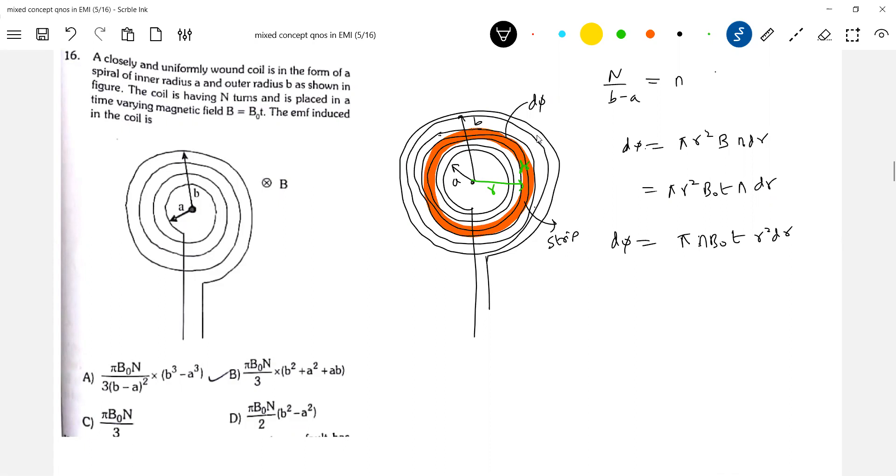This I'll differentiate now. So, I'll get EMF induced in this. Then EMF induced first in that particular strip there. Then I'll integrate from A to B. Then I'll get the total EMF induced. So, this is differentiating. So, this is what? Call this dE. Sir, I'll finish off. I'll finish off. Then others, they'll get confused. So, this will be, let it be A to B. So, πnB₀(r³/3) from A to B.